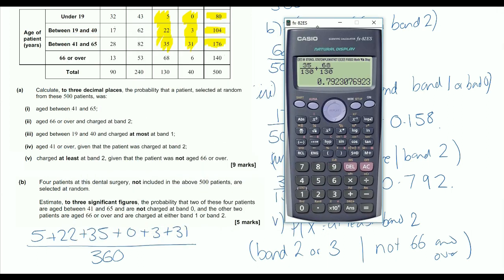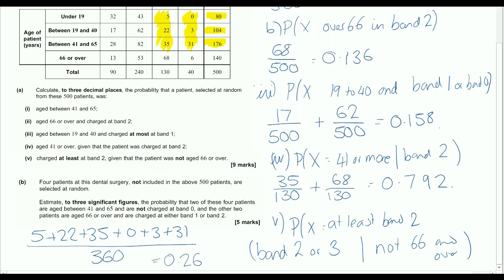So once I've done that, I'm just going to be putting all of this information into my calculator. So I'm going to get the numerator right, and all of that is divided by 360. So it's 4 out of 15, or 0.267. So that is the probability that the person that is chosen is, given that they're not 66 or over, is charged at least band 2.